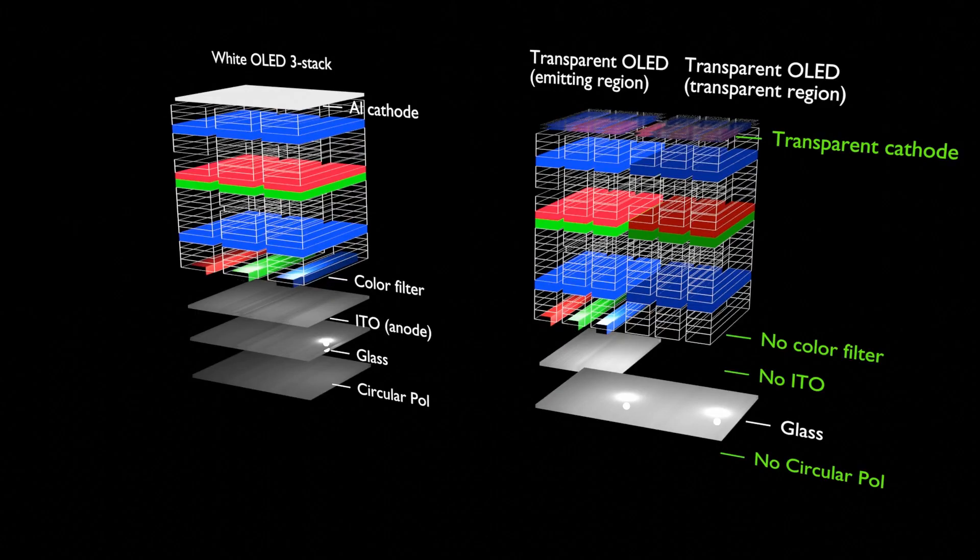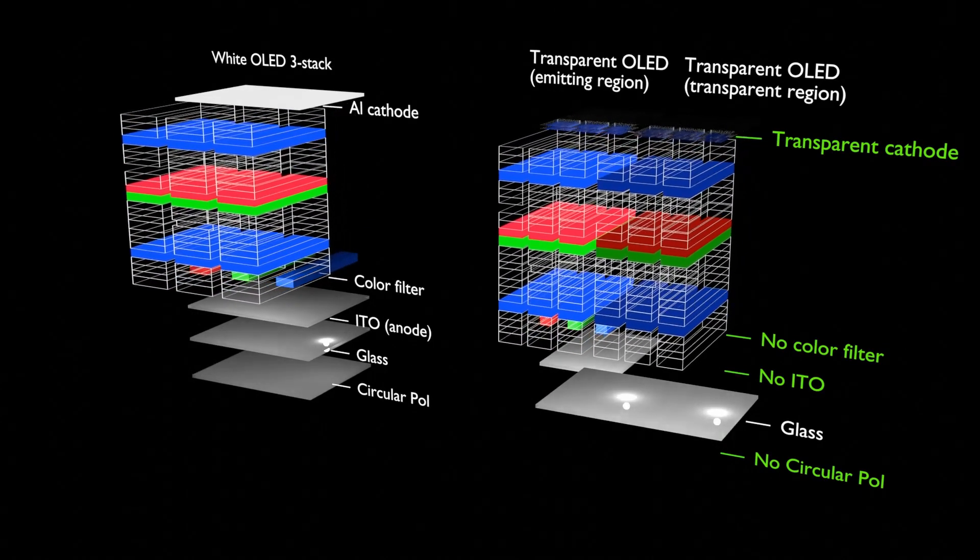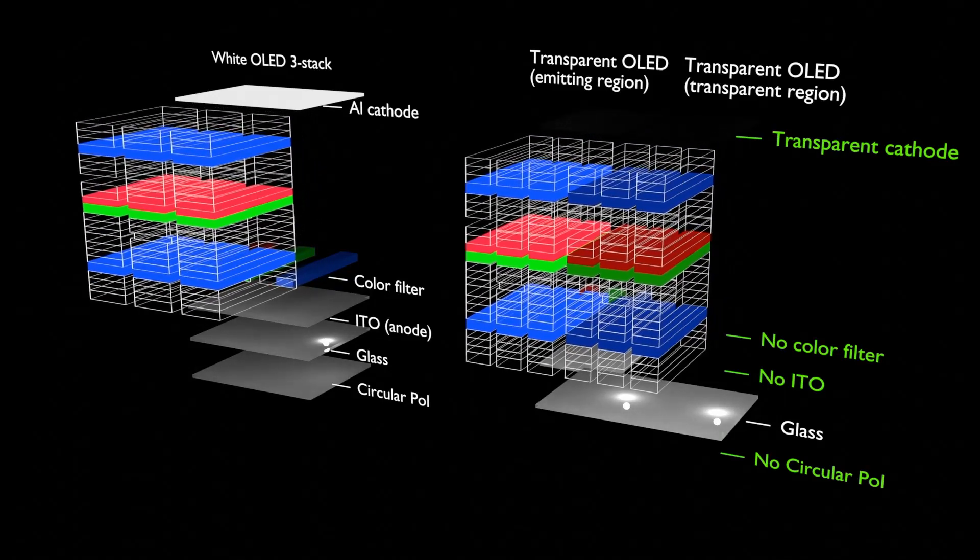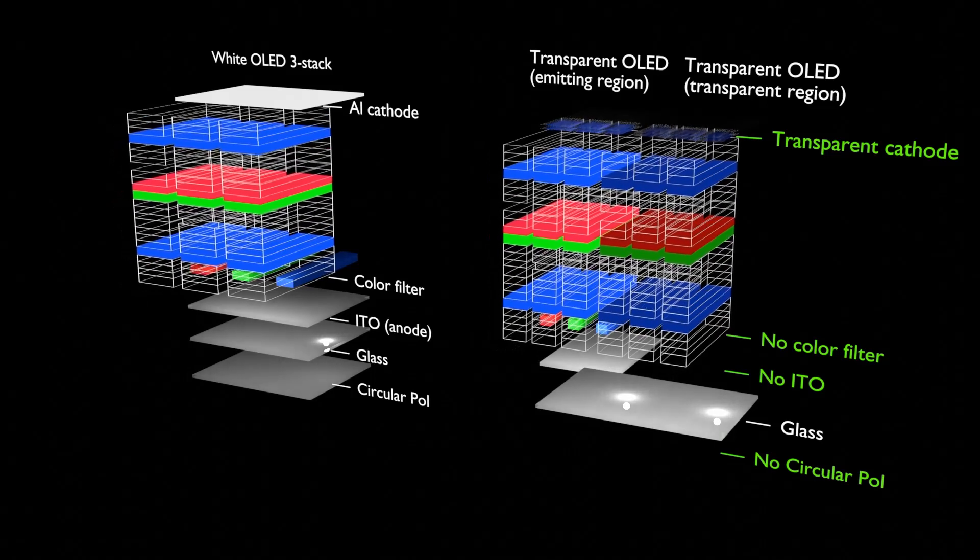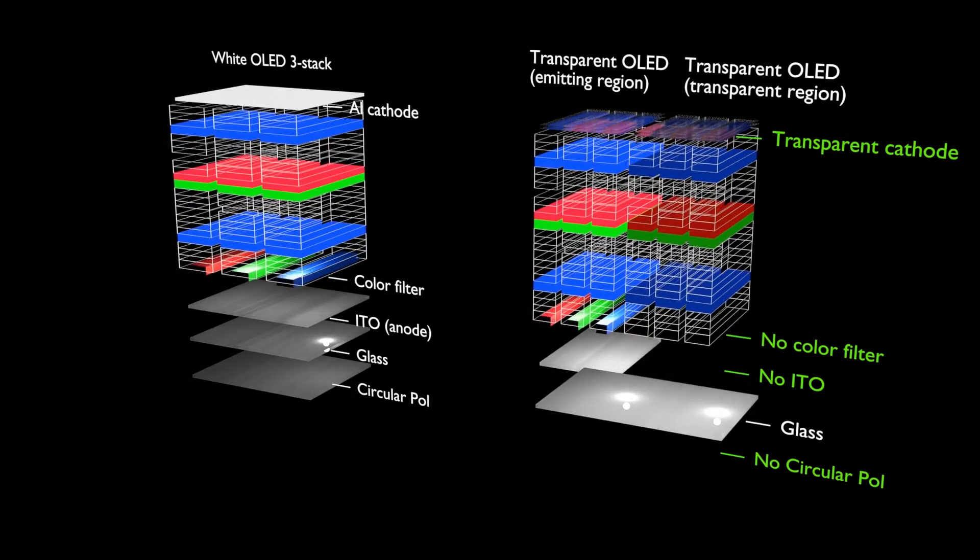For the same reason, the multi-layered organic material remains in the non-luminous area. Since the absorption of visible light from organic materials is not very high, it is left as it is instead of being removed through a complicated process.